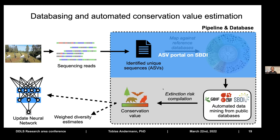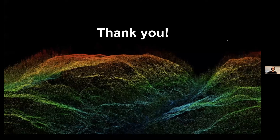An additional element is applying machine learning tools to model extinction risk status, using available IUCN data and geographic information to model extinction risk for unassessed species. This provides weighted diversity estimates for a given site and continuously updates the neural network with new data. The future vision is a combination of on-site eDNA sampling and public database access for data-driven biodiversity assessment at high resolution, with multi-dimensional biodiversity metrics that overcome the current taxonomic biases in publicly available data.